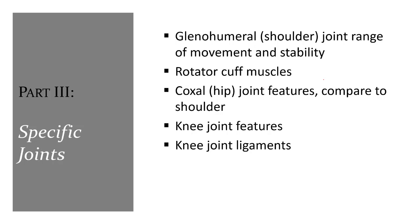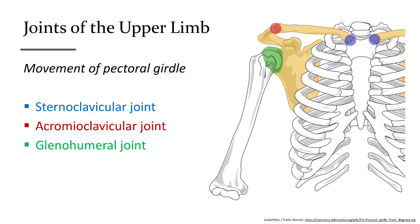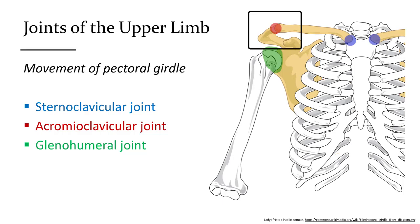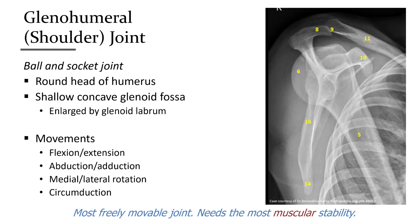Now we'll finish the joint lecture by looking more deeply into specific joints: the shoulder, hip, and knee. The upper limb is attached to the thorax at the sternoclavicular joint. The acromioclavicular joint connects the stabilizing clavicle to the movable scapula. The scapula and clavicle are anchored primarily by muscles with one skeletal connection at the manubrium of the sternum. The main joint we think of as the shoulder is the glenohumeral joint, a standard ball-and-socket joint with a very wide range of motion.